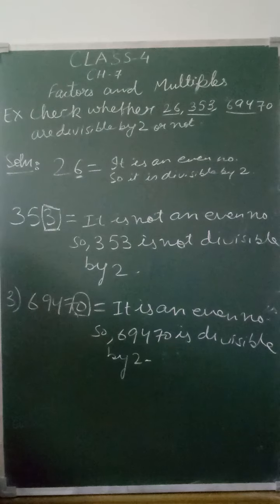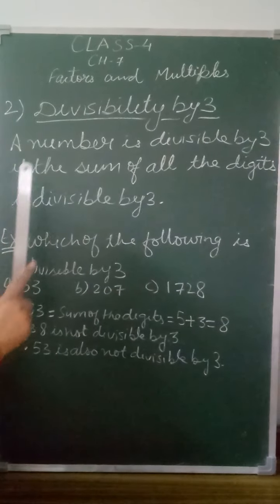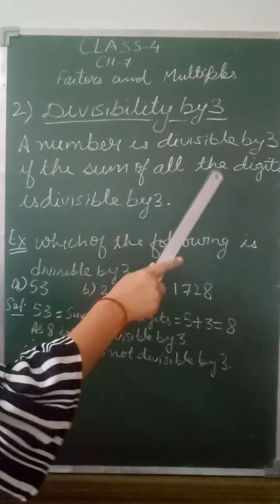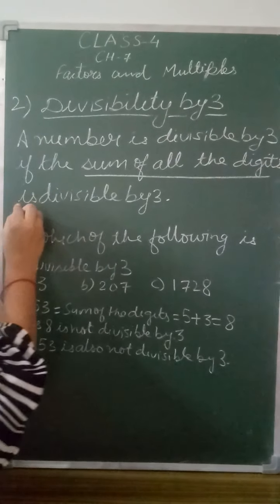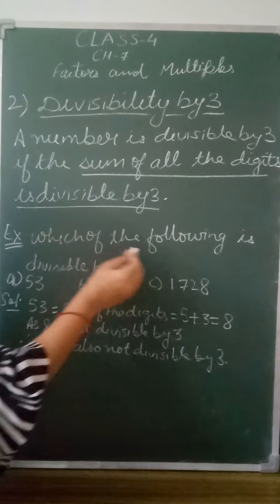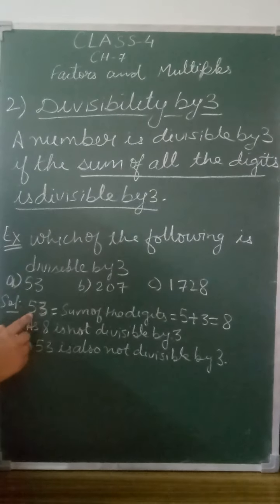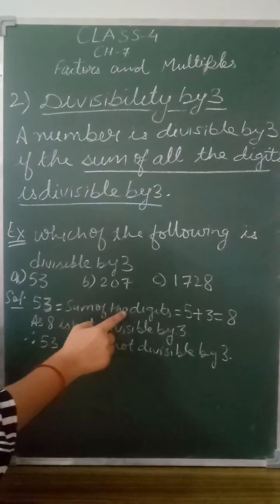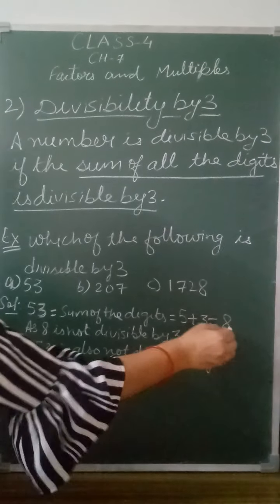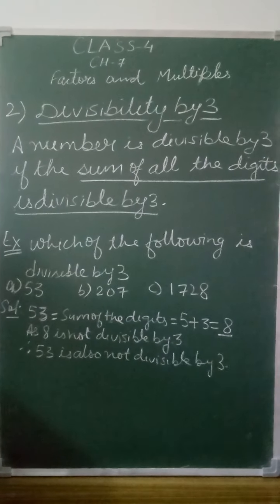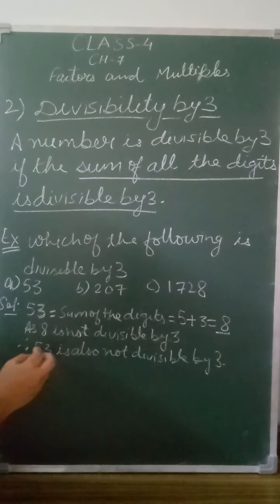The next rule is divisibility by three. A number is divisible by three if the sum of all its digits is divisible by three. For example, for 53: the sum of digits is 5 + 3 = 8. Since 8 is not in the table of three, 8 is not divisible by three, therefore 53 is also not divisible by three.